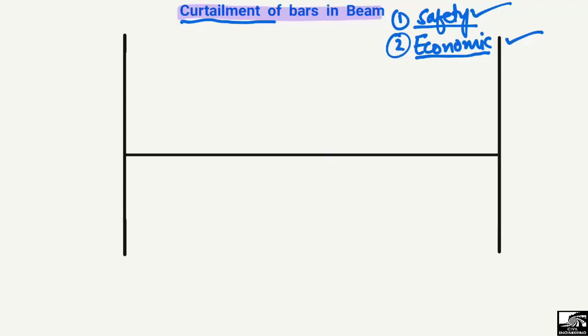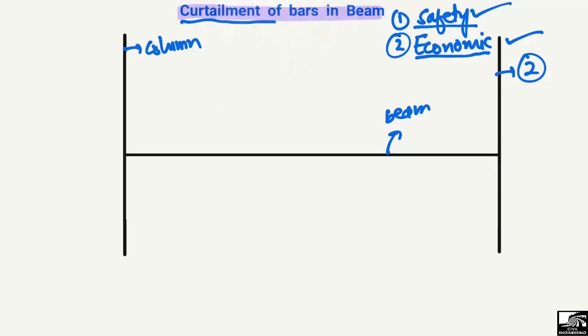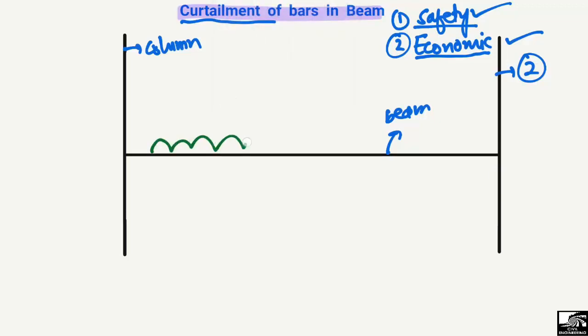Now let's come to the curtailment of bars. Consider that this is our beam — the horizontal member is the beam and these vertical members are the columns. Here is one column and here is another column. This is a general frame structure consisting of beams and columns. If I apply any load on this beam, which is mostly the case in reality...